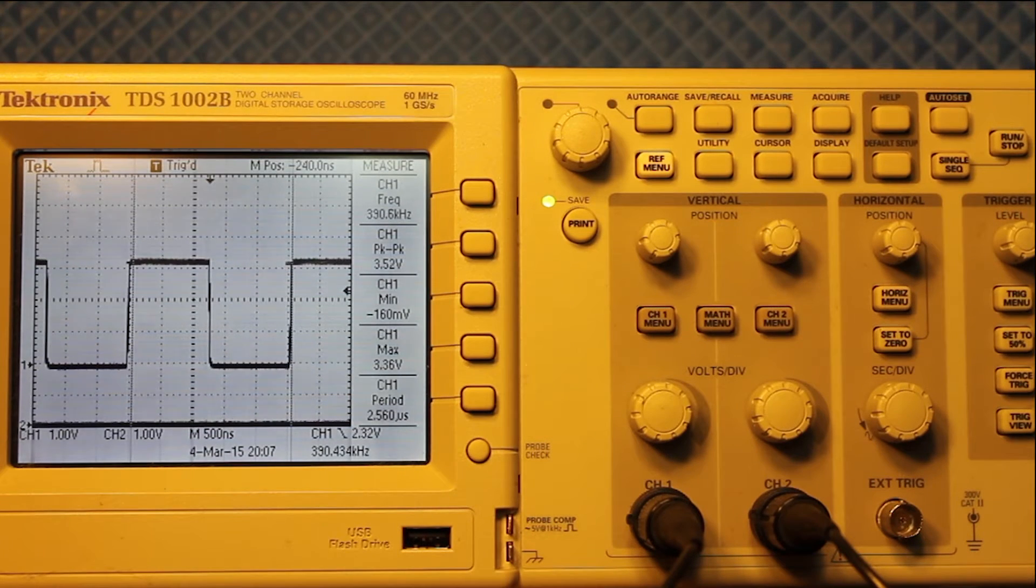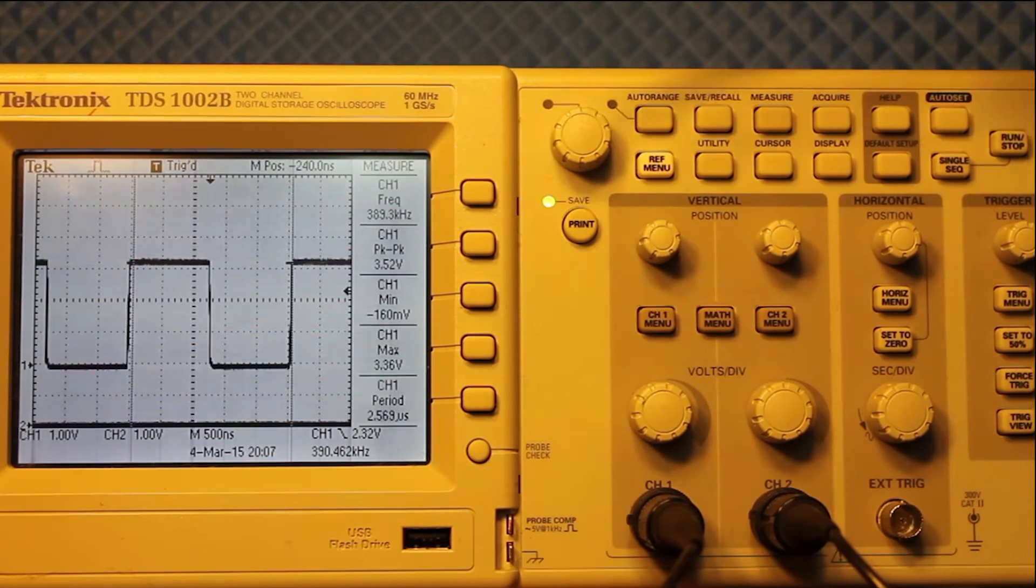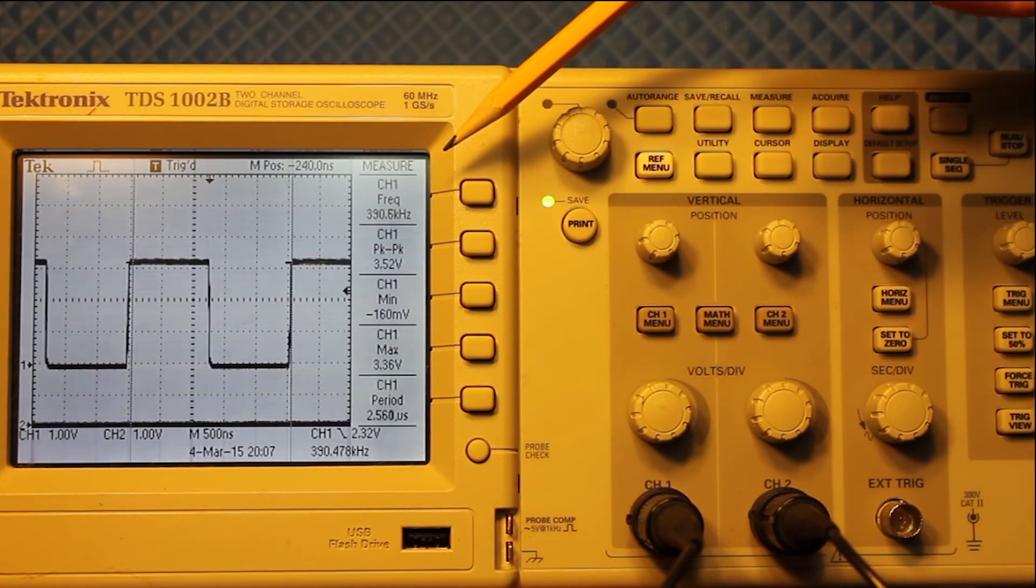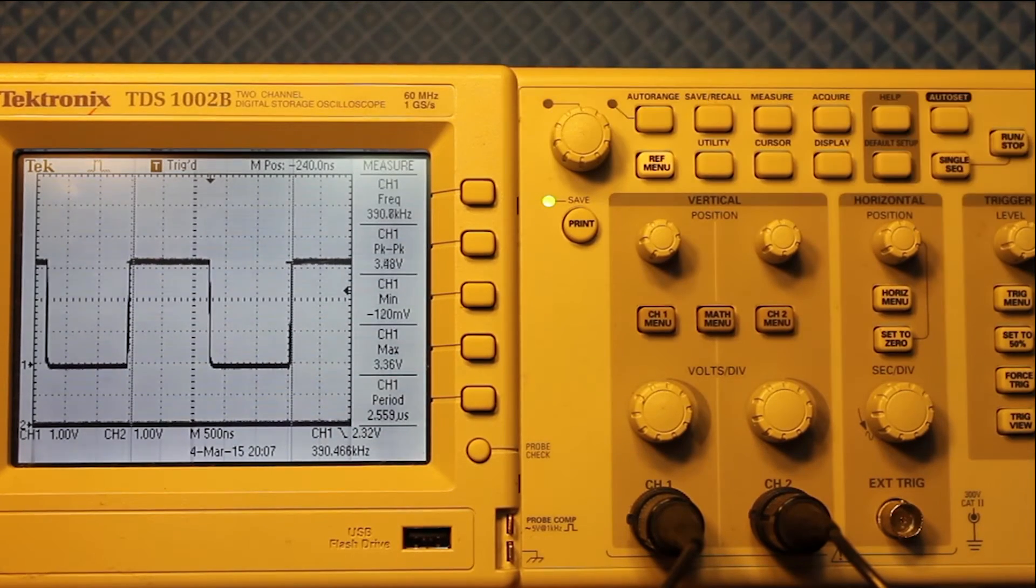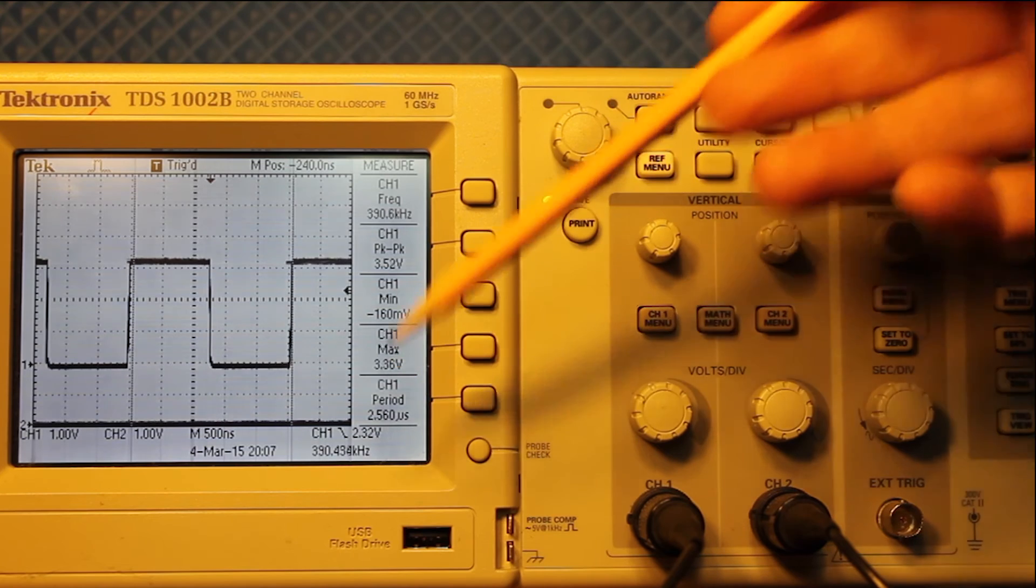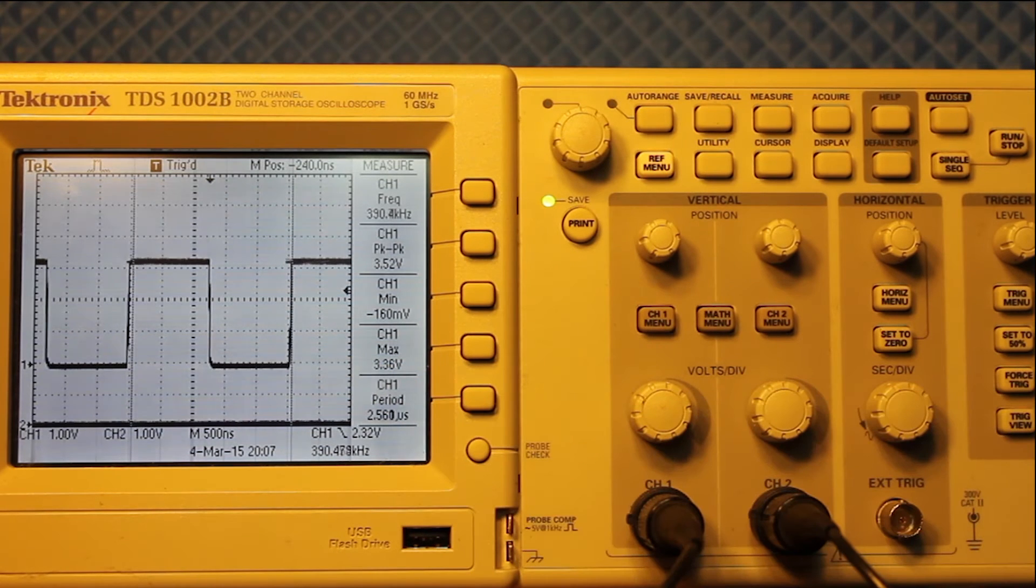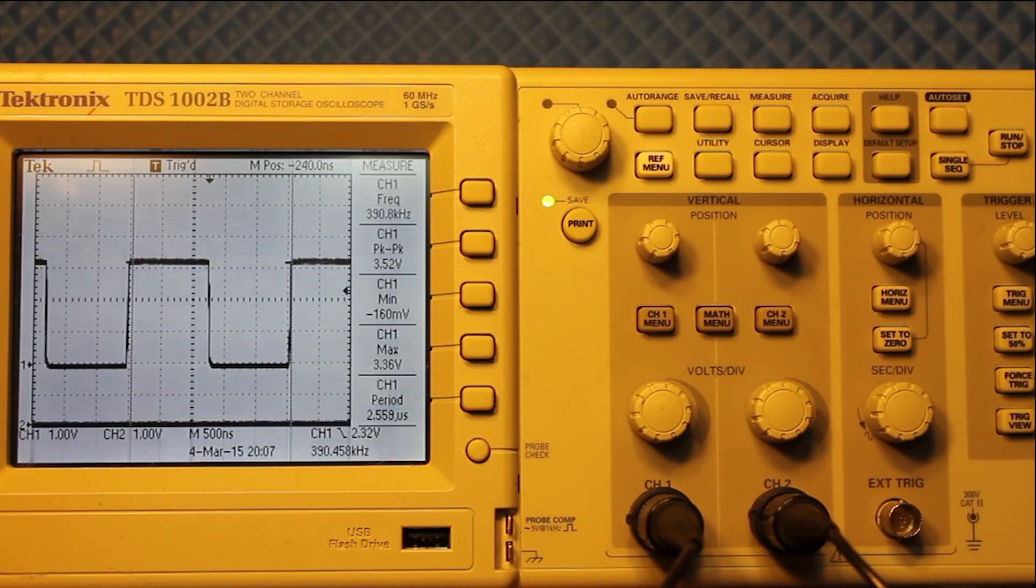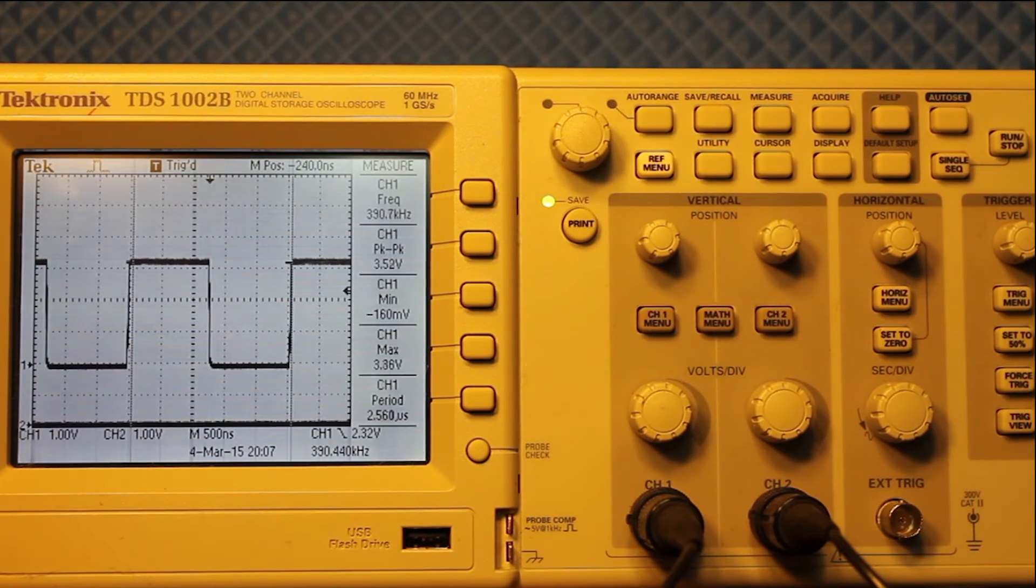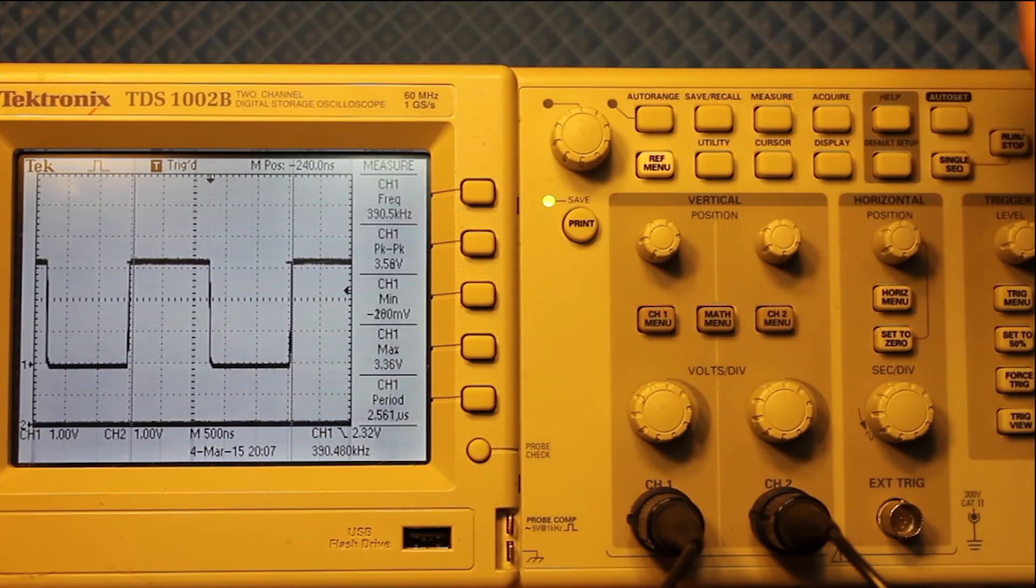Okay here you can see that we have a nice clean square wave signal. It's very stable. We see that we have a frequency of about 390 kilohertz, period of just over 2.5 microseconds and max voltage of 3.36 volts. That's about what we might expect. This is a 3.3 volt board and so that's what the oscilloscope tells us right off the bat.